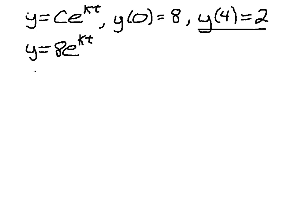So same thing as before. We've got 2 equals 8e to the 4K by plugging in 4 for T and 2 for Y. So 1 fourth equals e to the 4K by dividing through by 8.